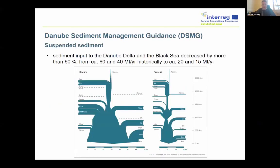Here are some concrete results from the project. We collected all available sediment data from the past all along the Danube from the different countries, then analyzed those data to identify problems related to sediment transport — surplus and deficit. This is one typical result where you can see how suspended sediment transport is changing all along the Danube River. This is the historic situation, before building the hydropower plants and before active anthropogenic impacts took place, and this is the actual situation.